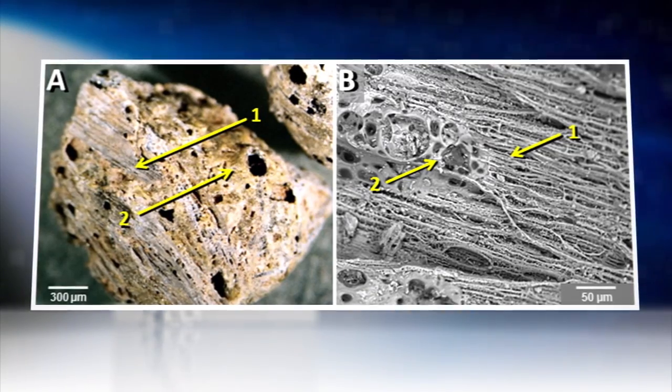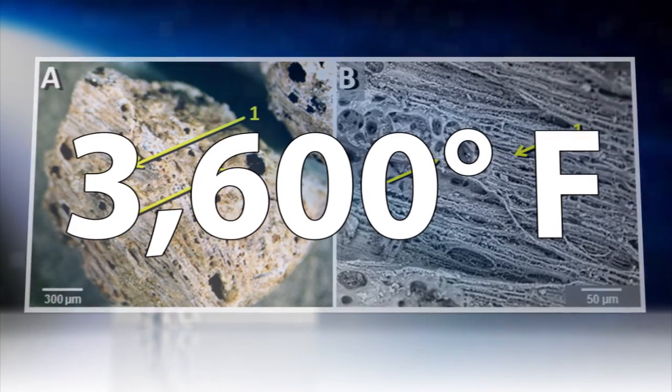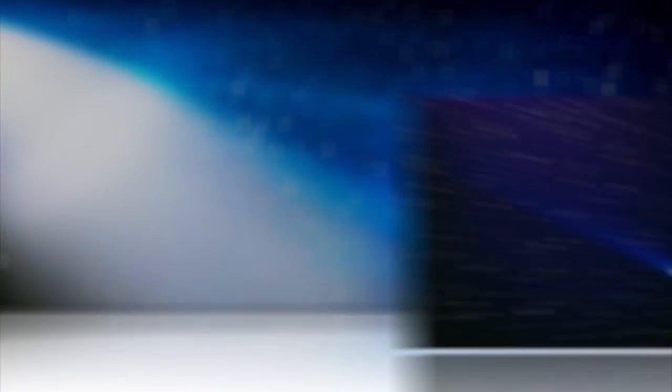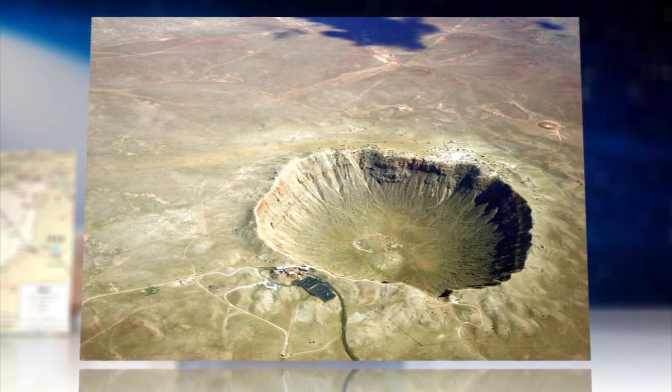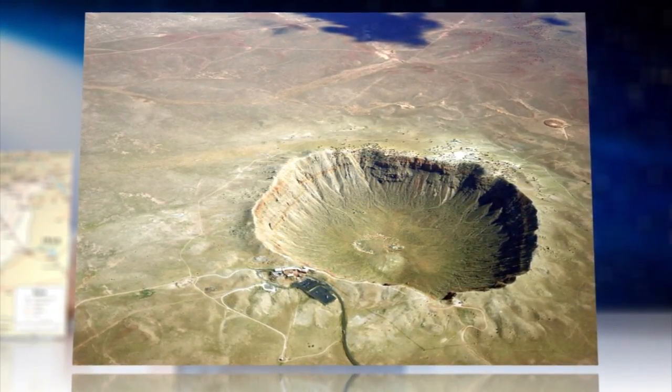Scientists report the material discovered formed at temperatures as high as 3,600 degrees Fahrenheit, isn't cosmic, volcanic, or man-made, and is consistent with similar stuff found in places like Arizona's Meteor Crater. These Siliceous Scoria-like objects, or SLOs,